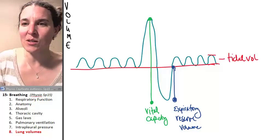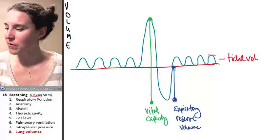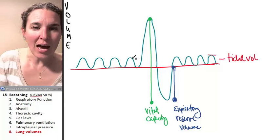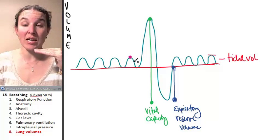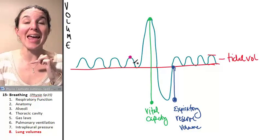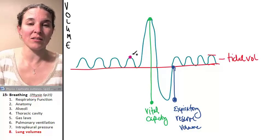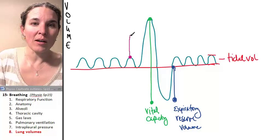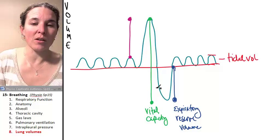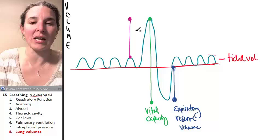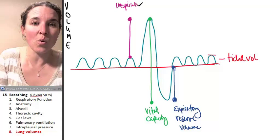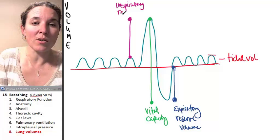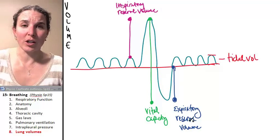So does it make sense that we would also have an inspiratory reserve volume? And indeed it is so. An inspiratory reserve volume comes from the top of a tidal breath. So the end of the tidal inhale to the top of your vital capacity inhale, the maximum inhale you have, that's your inspiratory reserve volume.